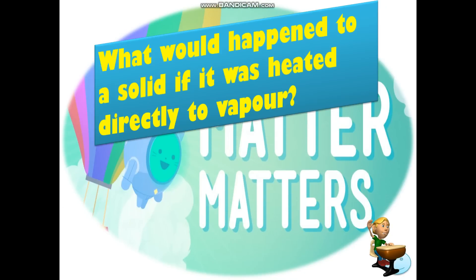What would happen to a solid if it was heated directly to a water vapor? At a given temperature, most chemical compounds and elements can possess one of three different states of matter at different pressures. In this case, the transition from a solid to the gaseous state requires an intermediate liquid state. But at temperatures below that of the triple point, a decrease in pressure will result in a phase transition directly from the solid to the gaseous state.